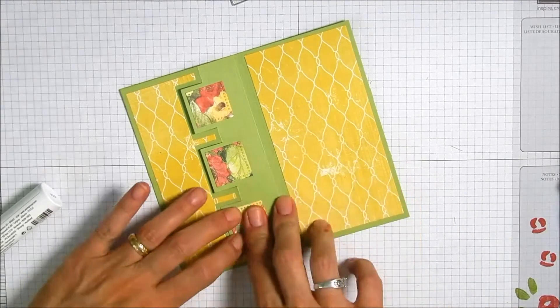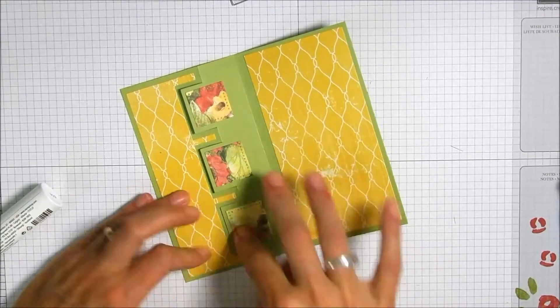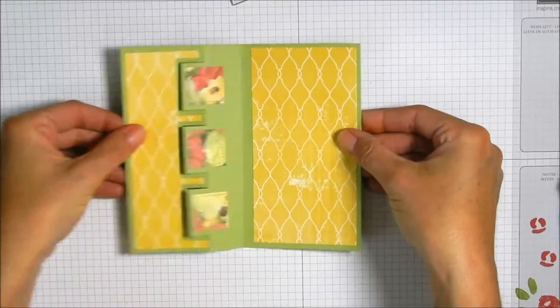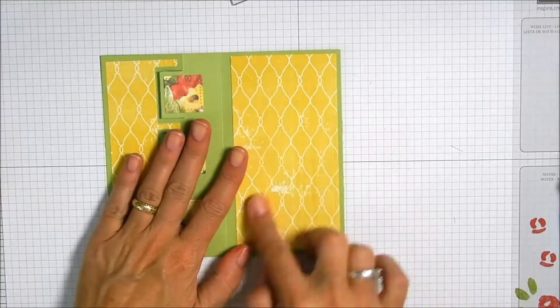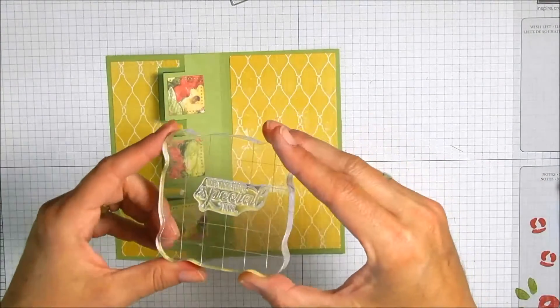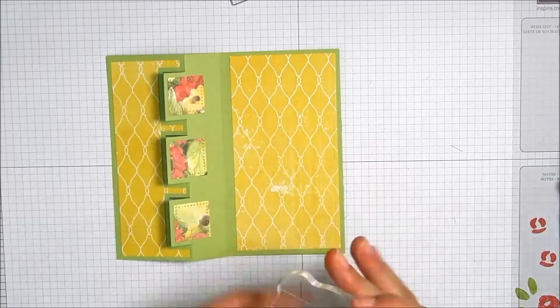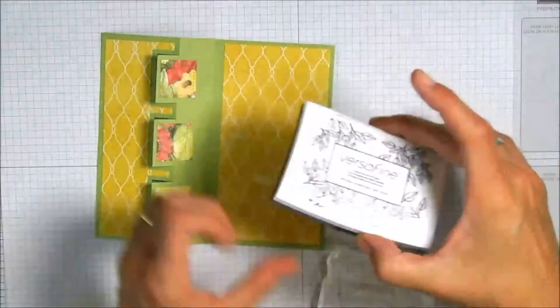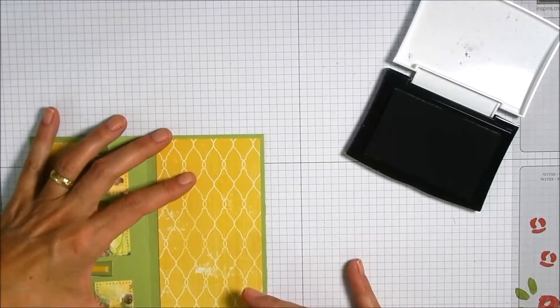For the sentiment on this card we're going to be using a couple of stamps out of that same Garden in Bloom stamp set. I'm gonna be stamping it in Onyx Black ink and it says something to the effect of I hope you feel special today because that's exactly what you are.